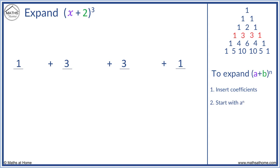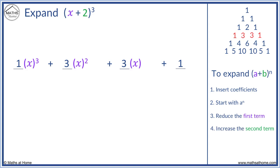Step 2 is to start with a to the n — this is the first term in the bracket to the power. We have a first term of x and the power is 3, so we write (x) to the 3. The next step is to reduce the power of this first term as we move along: x to the 3, then x to the 2, x to the 1, and finally no x's. Next we increase the second term from 0 to 3. The second term is 2: we start with 0 twos, then 2 to the 1, 2 to the 2, and 2 to the 3.